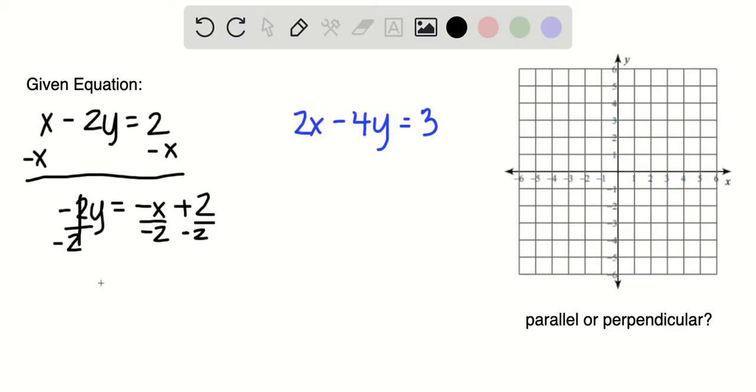So my slope intercept form for the first equation will be y is equal to negative x divided by negative 2, which will just be a positive one half x, and then positive 2 divided by negative 2 is a negative 1.